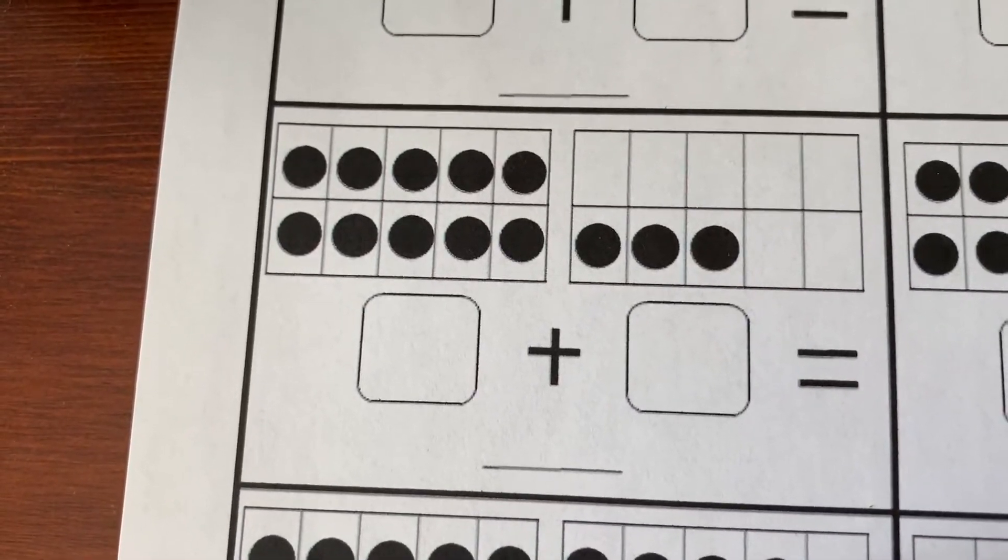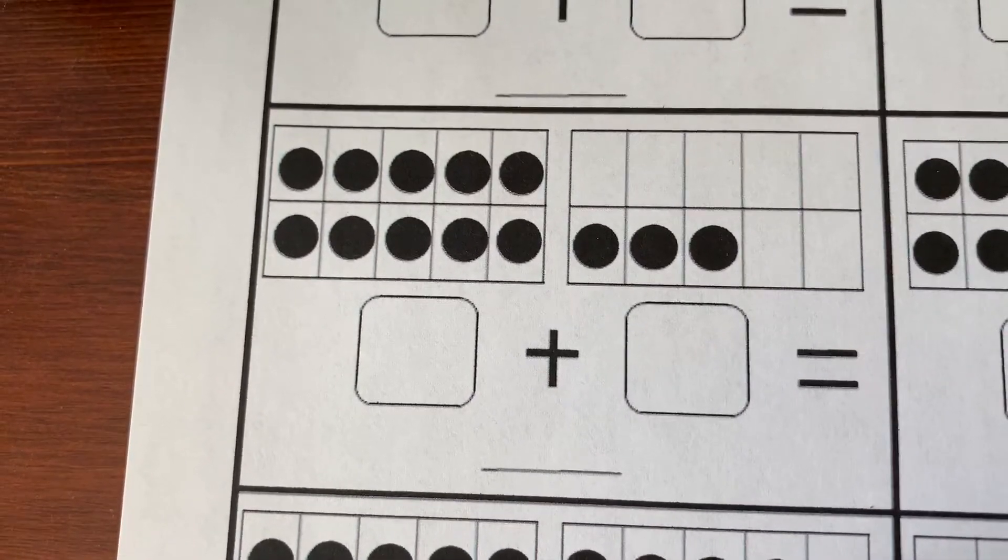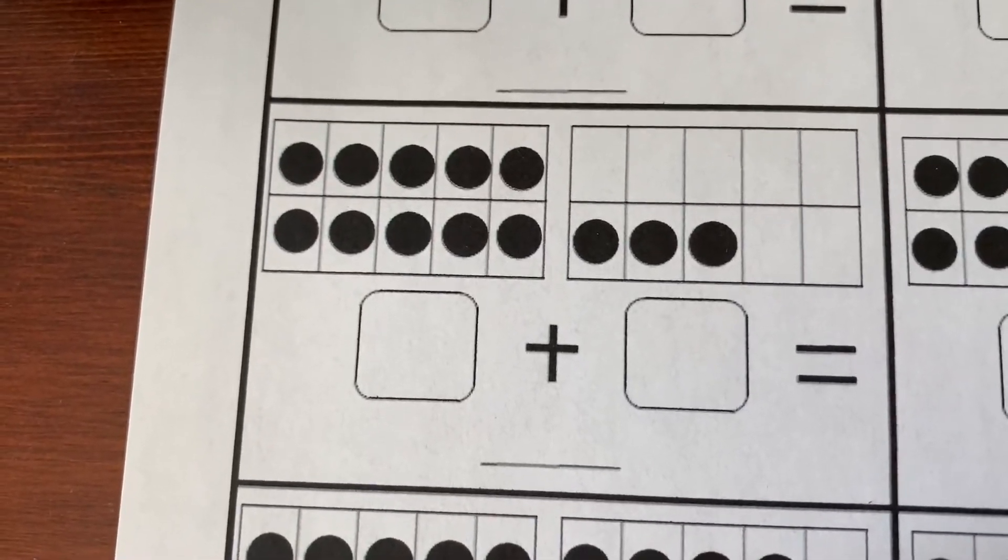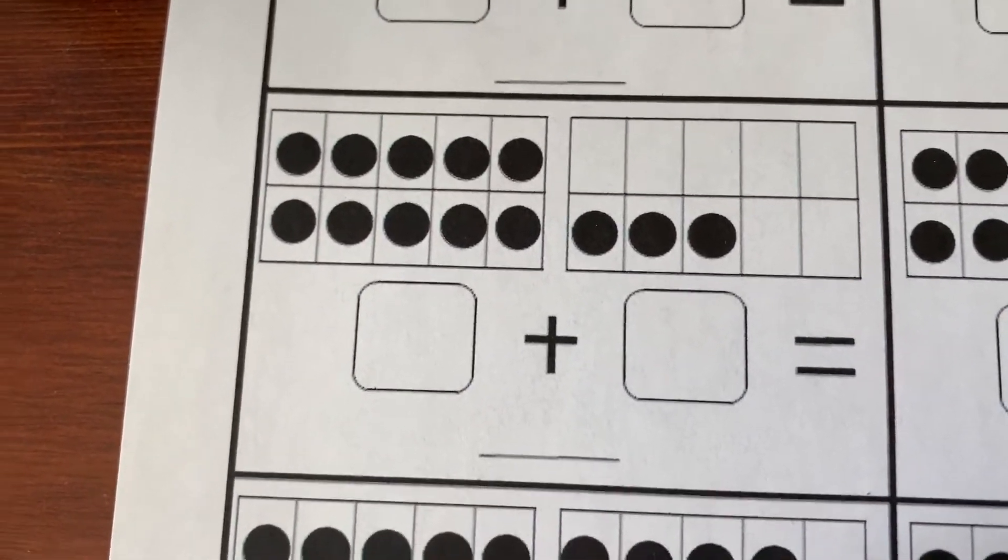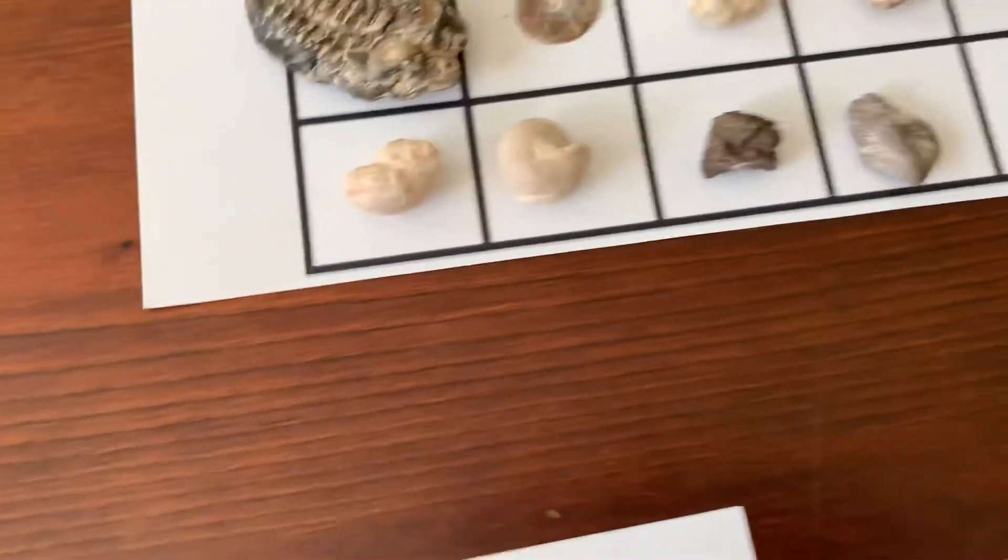This is the problem right here of 10 plus 3. Working eventually to the abstract, students would just see the numbers 10 plus 3 on a page. But always give them the option to have the concrete.